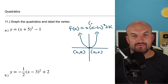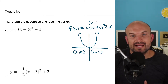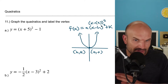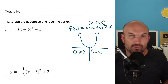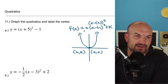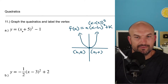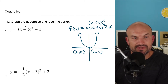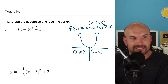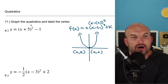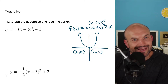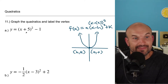Another way we could write this is x minus h, quantity squared. That's a really important thing I want to focus on here, because it's x minus h. So when you see a problem like this, a lot of students will say five, negative one is the vertex. And no, that's not the vertex.